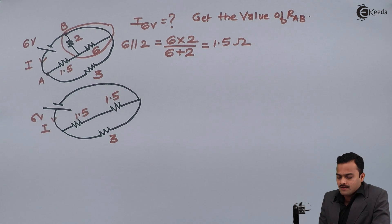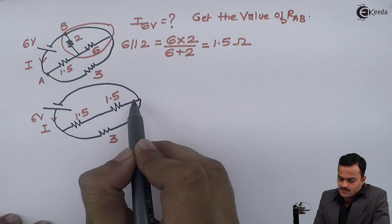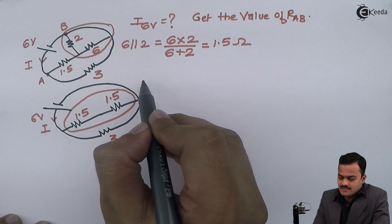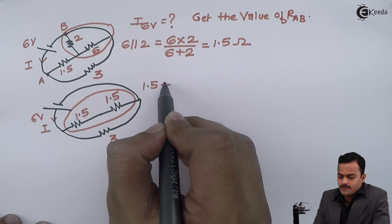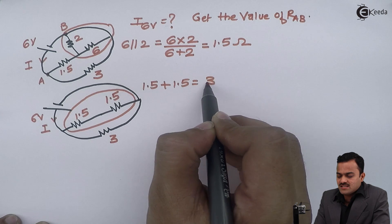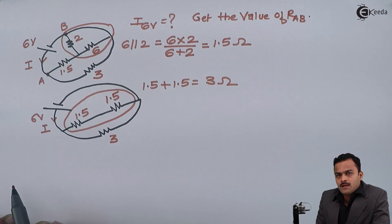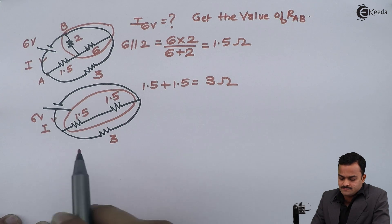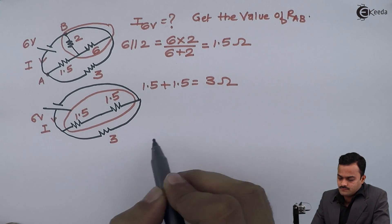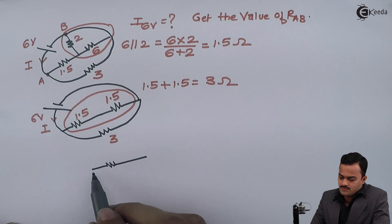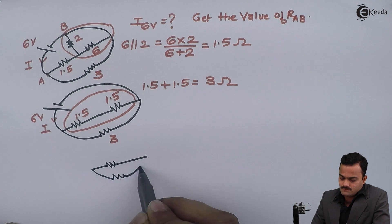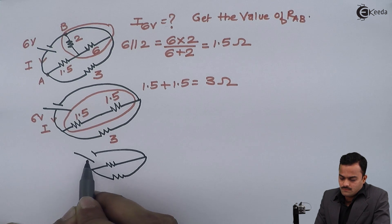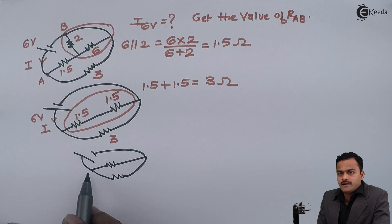Now the problem becomes simple because 1.5 ohm and 1.5 ohm are clearly in series. So 1.5 plus 1.5 gives 3 ohm. These two resistors combine into a single 3 ohm resistor, and the original 3 ohm remains untouched, connected to the 6 volt battery.